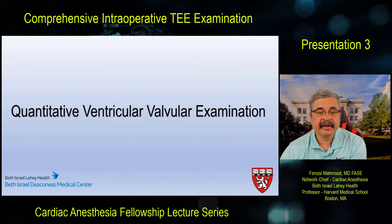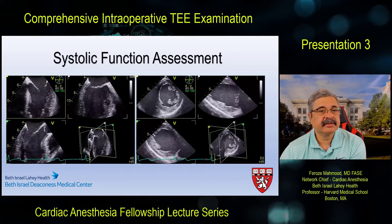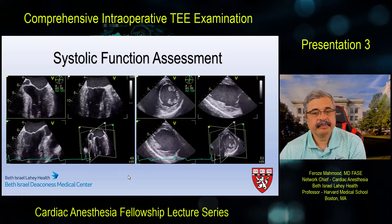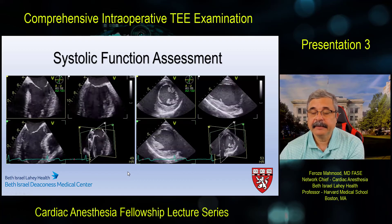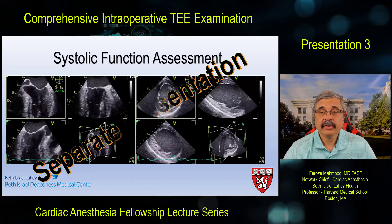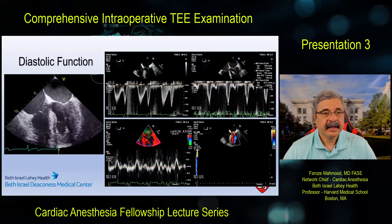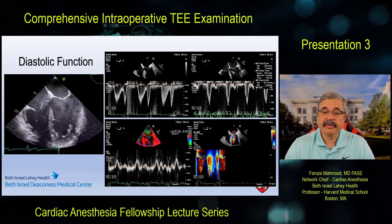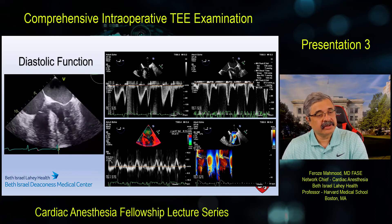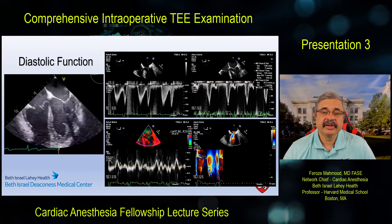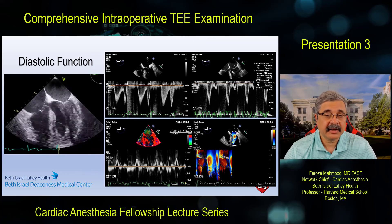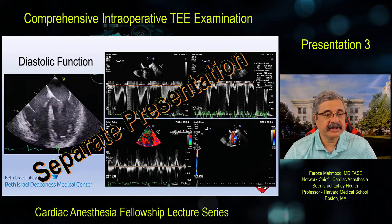The quantitative ventricular and valvular examination consists of systolic function assessment including ejection fraction, using multiplanar examination with simultaneous orthogonal planes of the mitral valve — covered as a separate lecture. A comprehensive intraoperative 2D examination also includes diastolic function assessment: diastolic filling abnormalities and estimation of left ventricular end-diastolic pressure using E over E-prime, also to be covered separately.